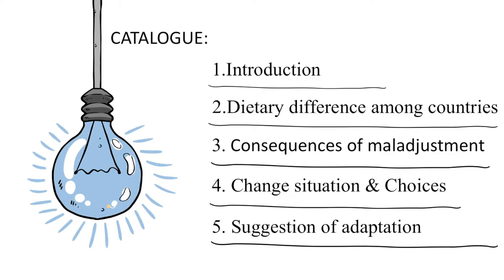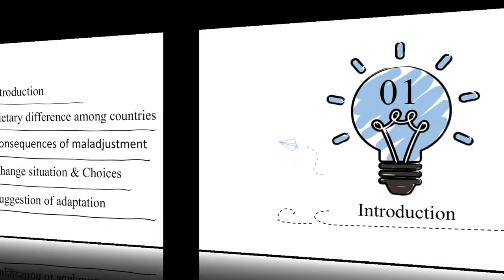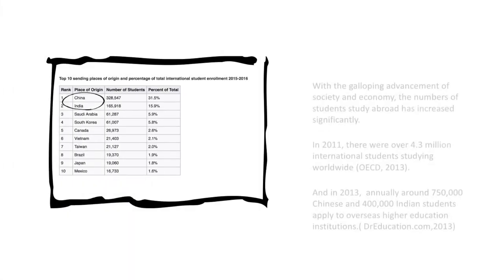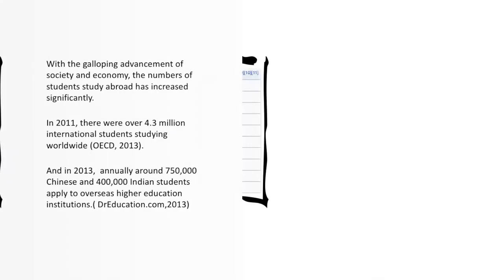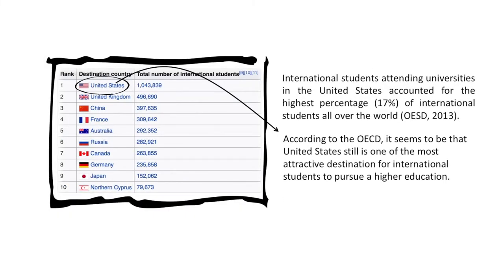This is a catalog of the sections of this video. Part one: Introduction. With the developing advancement of society and economy, the number of students studying abroad has increased significantly. In 2011, there were over 4.3 million international students studying worldwide. In 2030, annually around 750,000 Chinese and 400,000 Indian students applied to overseas higher education institutions. From the chart, it seems that the United States is still one of the most attractive destinations for international students to pursue higher education.